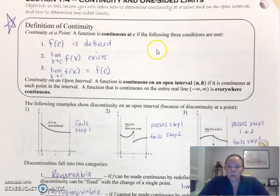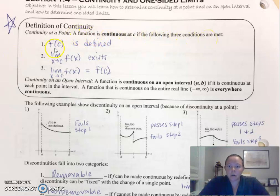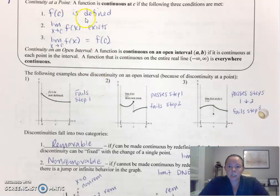First and foremost, the formal definition of continuity at a point is: a function is continuous at C if the following three conditions are met. f of C is defined, the limit as x approaches C of f of x exists, and the limit as x approaches C of f of x equals f of C. And there are visual explanations of why you need all three of these requirements to show that it's continuous at a point C.